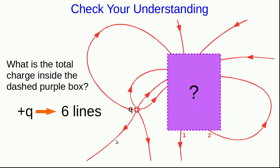So there are one, two lines coming out, and there are one, two, three, four, five, six, seven, eight lines going in.